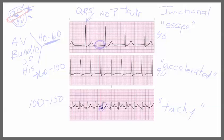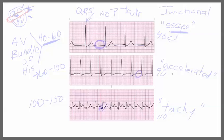On the third strip, counting the complexes gives us about 10 to 11, so this is about 110 beats per minute. The QRS is still narrow, there are no P waves, and it's consistent across the entire strip. So the first strip at a rate of 40 would be referred to as a junctional escape. The second strip, beating at an accelerated rate of 90 with no P waves and a narrow QRS, is considered accelerated junctional.